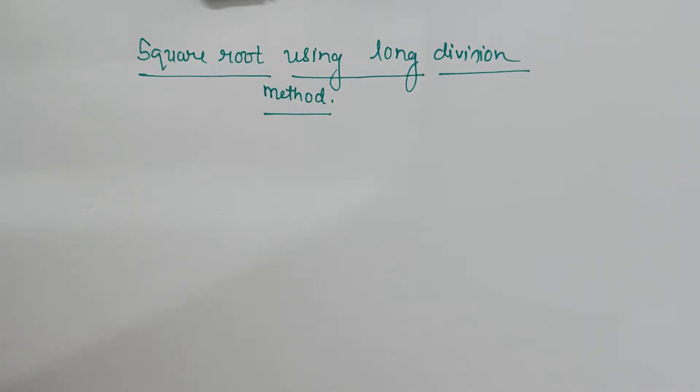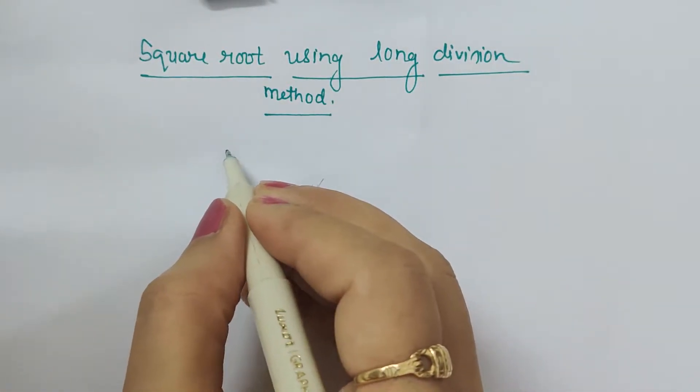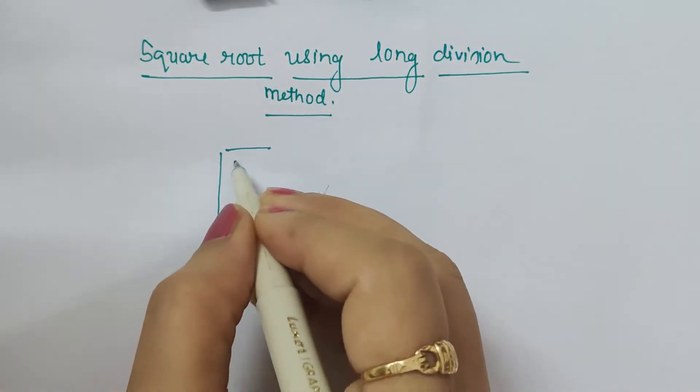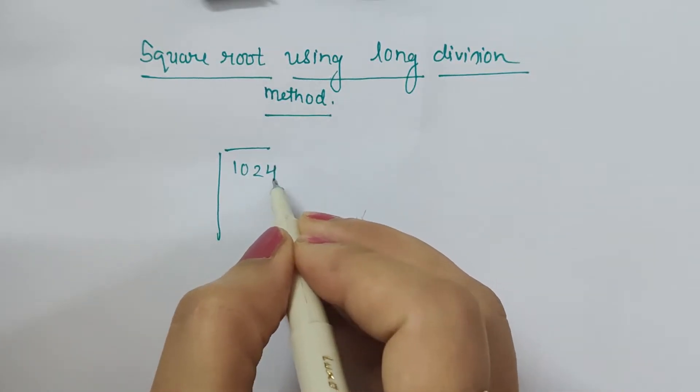Hello friends, in this video we are going to learn how to find square root using long division method. Let's take an example. Let us suppose we have taken 1024.